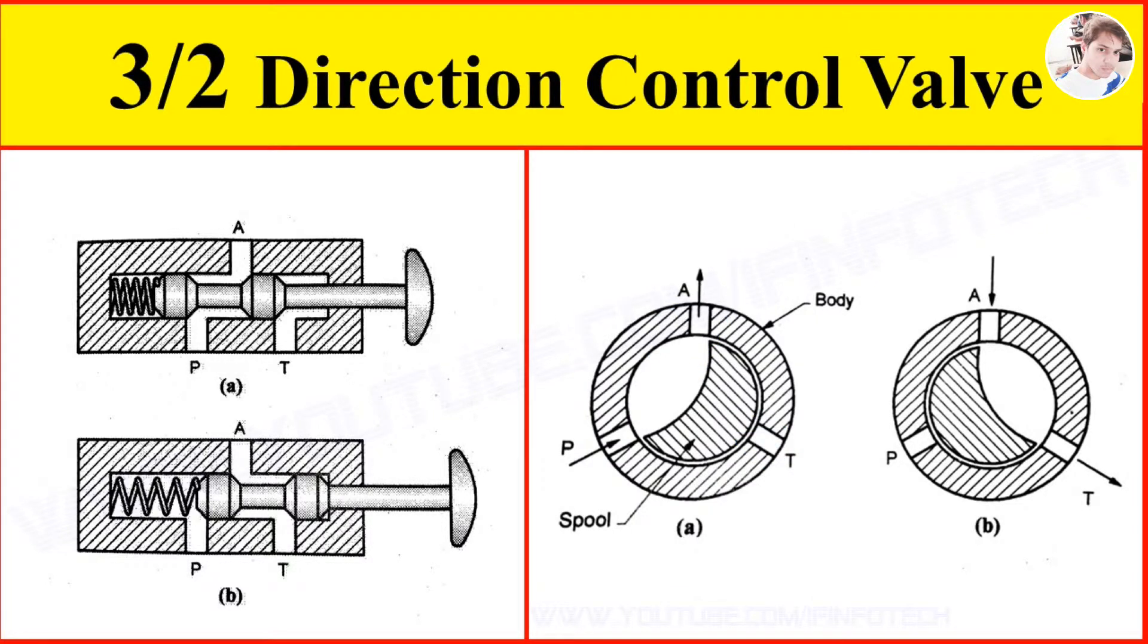When the spool is rotated to 120 degrees, as shown in figure B, there is a connection from port A to port T. Oil flows from the single acting cylinder to tank. Hence, the cylinder retracts. The inlet port P is closed.